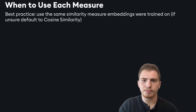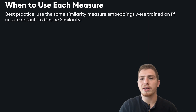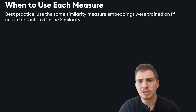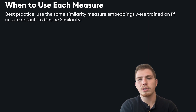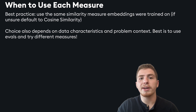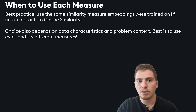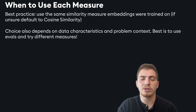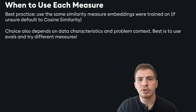So when do you use each measure in practice? The best practice is to use the same similarity measure that embeddings were trained on. If your embeddings were trained on cosine similarity, use cosine similarity; if trained on Euclidean distance, use Euclidean distance. Using a different measure from the one your embeddings were trained on can yield unexpected results. Your choice should also depend on your data characteristics and problem context — define what similarity means for your problem and whether you care about the relative strength of your vectors. Try some queries with different metrics, and if you have evals, use them to get a more robust comparison.